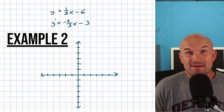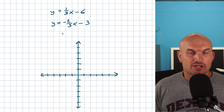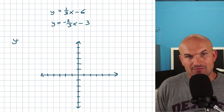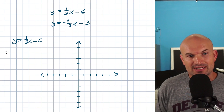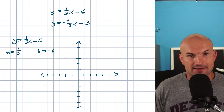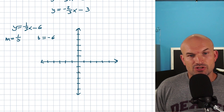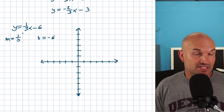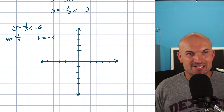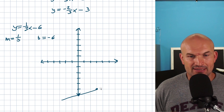In the second example, we have fractional slopes, which actually makes life easier because you already know the rise and the run. I have y equals one-third x minus 6. The slope is 1 over 3 and the y-intercept is negative 6. Plot the y-intercept by going down 6 units from the origin. Then follow the slope: go up 1 and over 3. Connect those two points.